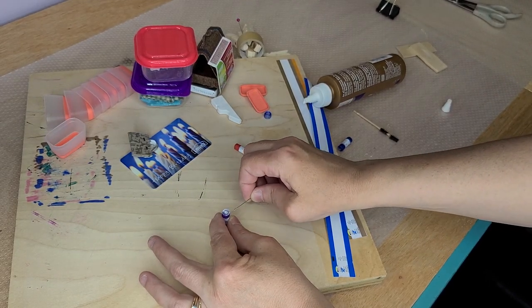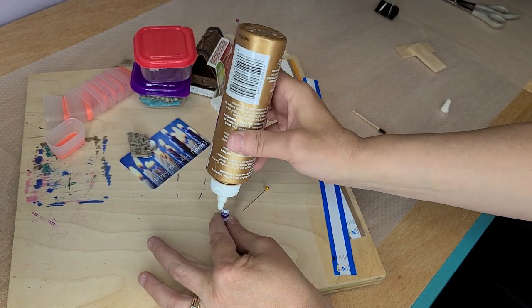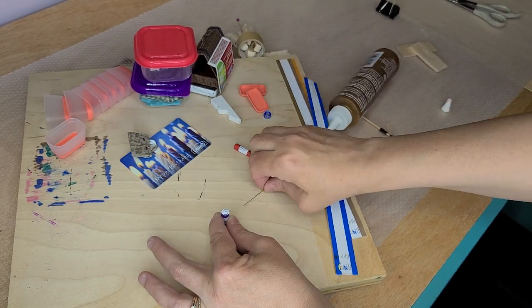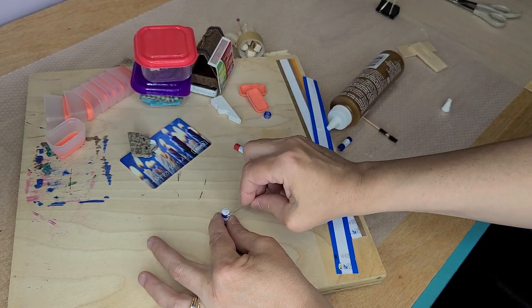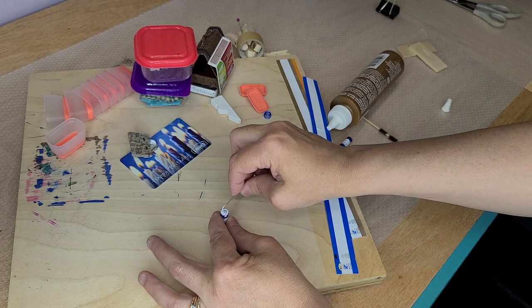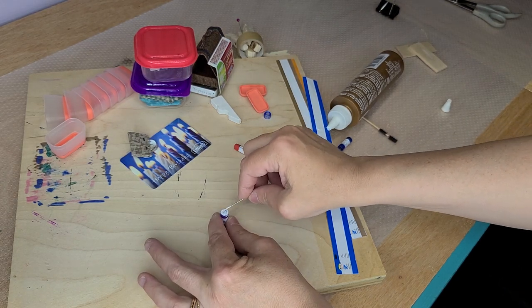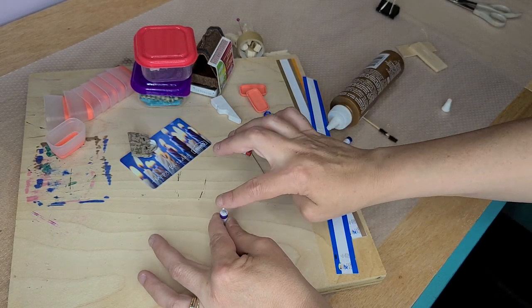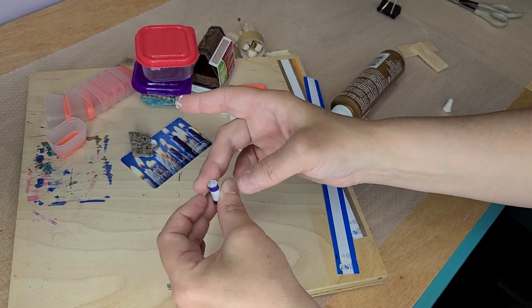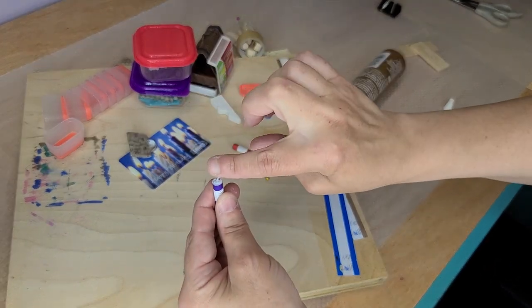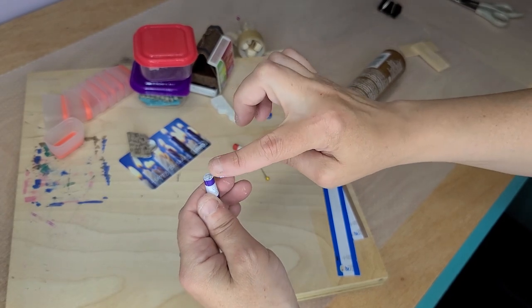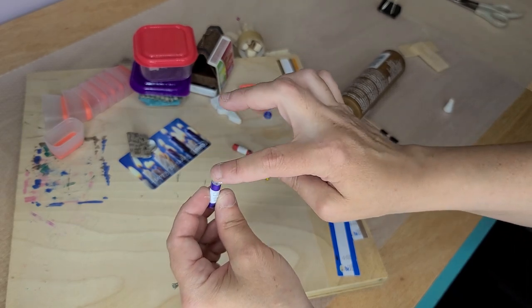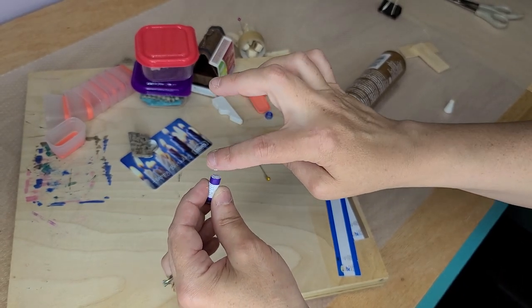Just kind of smooth it in there, go a little bit at a time. Make sure it gets right down in those holes. Once it's dry, if it still has holes in it then go back over it again with the glue because the glue will fill that in.